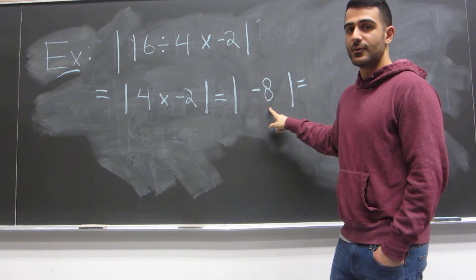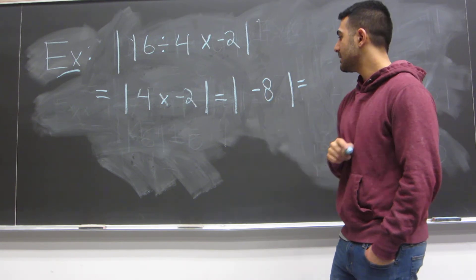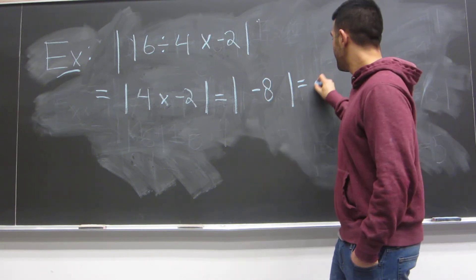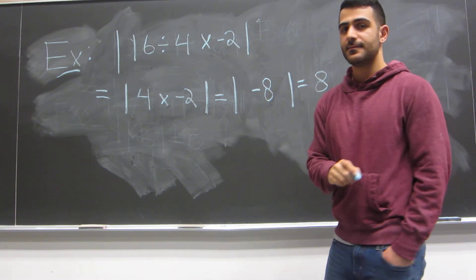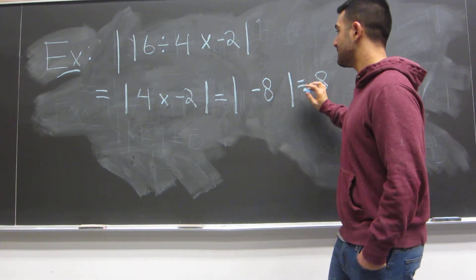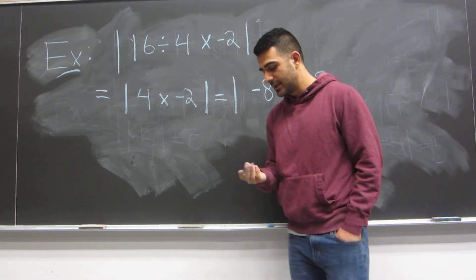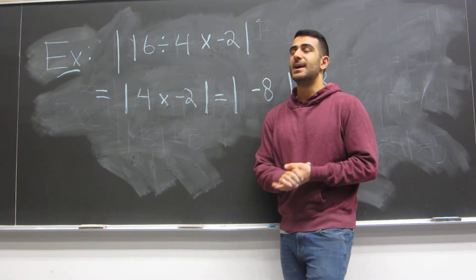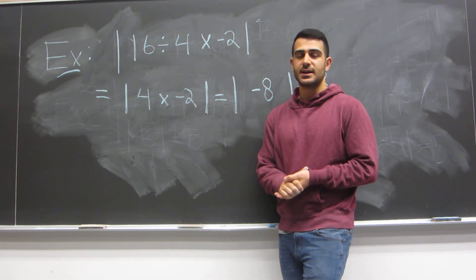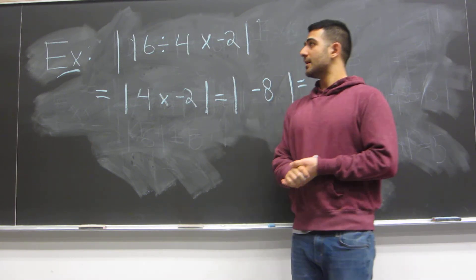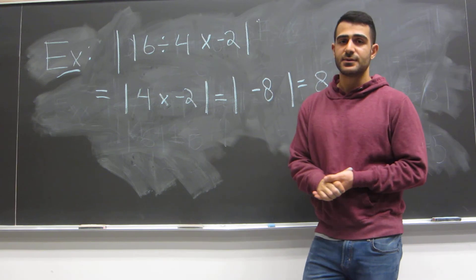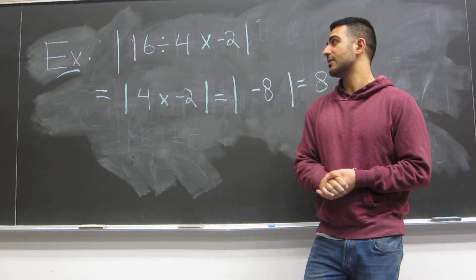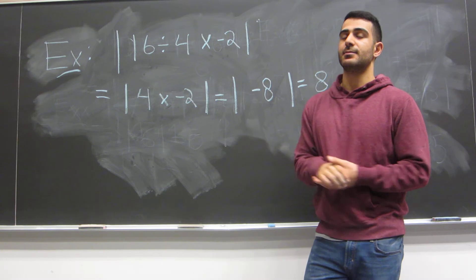We can't simplify anymore, so what is the absolute value of negative 8? That's 8. We're done. In the next video, we're going to do some BEDMAS examples where we have a mixture of subtraction, addition, multiplication, and division inside the absolute value.